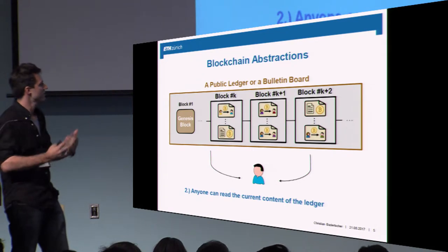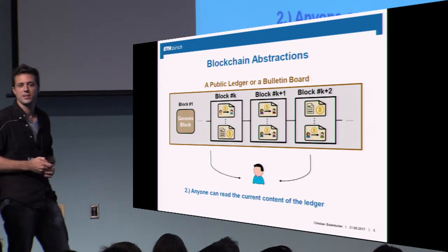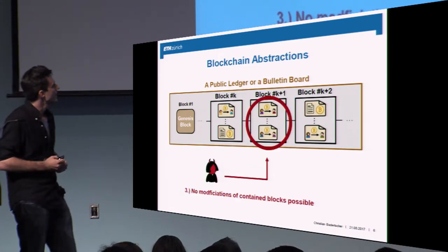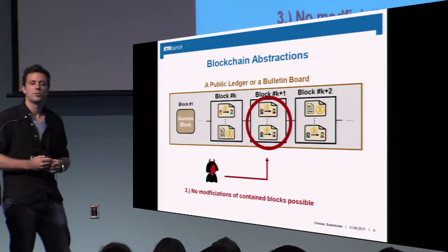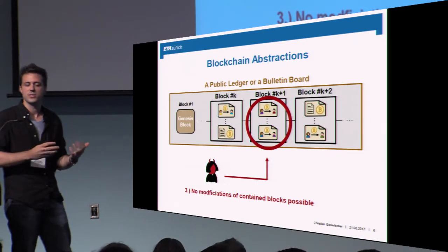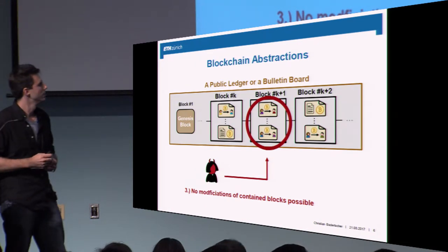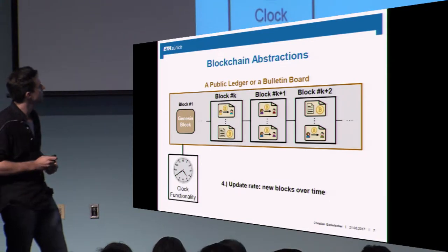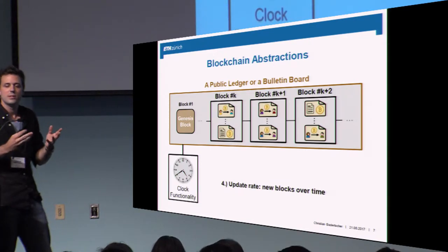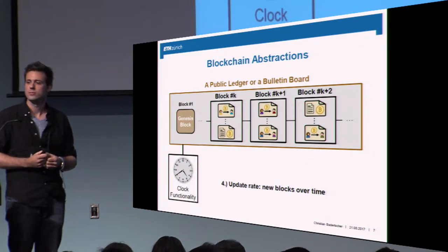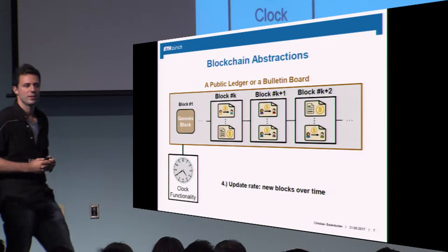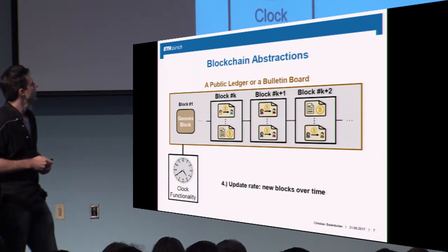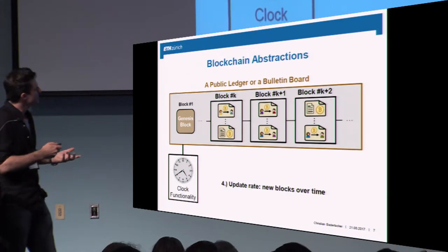You can just ask what's the state of this ledger and see how much money a certain address has. Probably the most interesting property is that even an adversary cannot modify what's already in there — so it's immutable, it's written in stone. And as a fourth property, such a ledger functionality is typically connected to a clock, to reason about speed — how many blocks show up over time. This is typically the specification found in the literature.